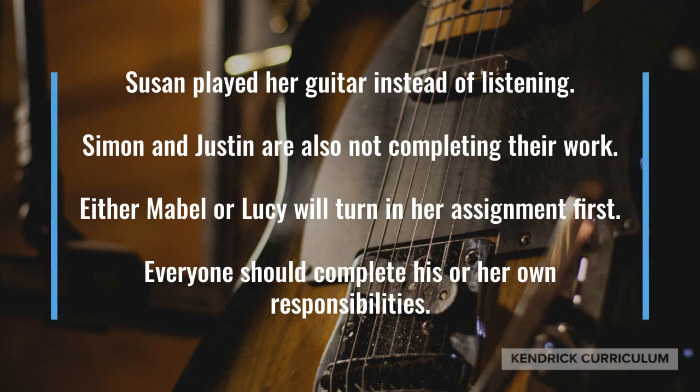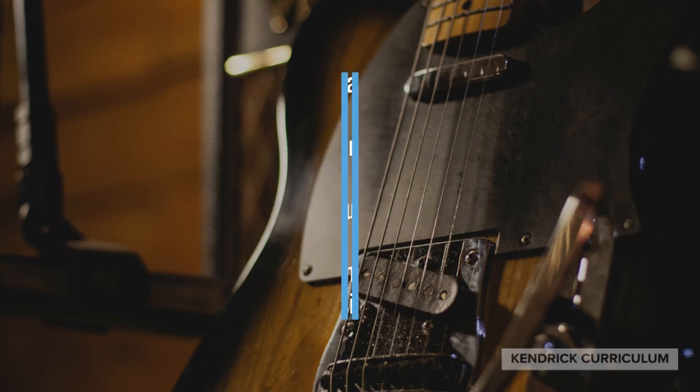Susan played her guitar instead of listening — Susan is the antecedent of her and agrees in gender and number. Simon and Justin are also not completing their work — Simon and Justin, the antecedent of their, agrees in number and gender. Either Mabel or Lucy will turn in her assignment first — either/or makes that singular, and Mabel or Lucy makes that feminine, so her agrees. Everyone should complete his or her own responsibilities — everyone and his or her are both singular.